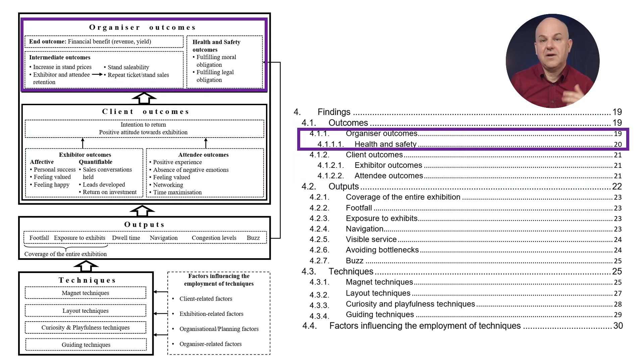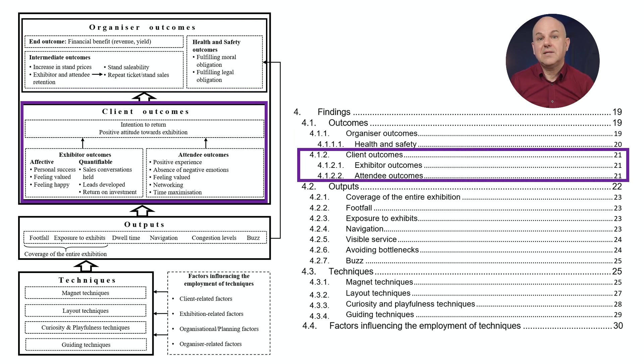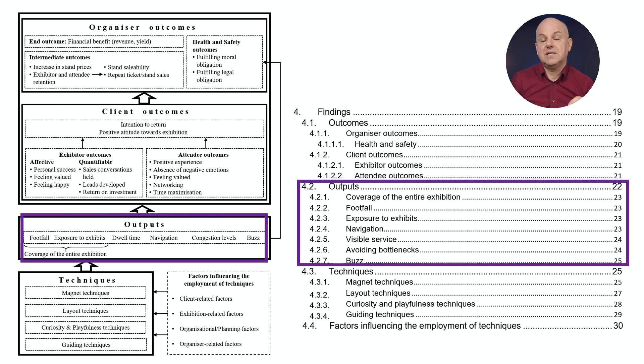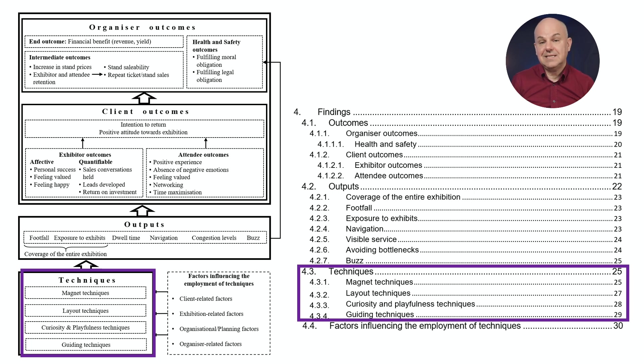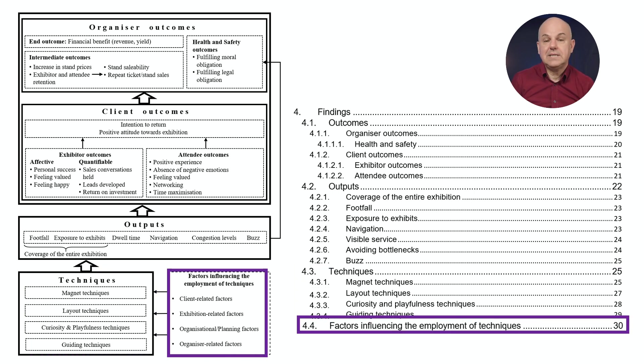Section 4.1.1 covers the organiser outcomes and 4.1.2 covers the client outcomes. Section 4.2 refers to the outputs, with subsections for each of the seven specific outputs. Section 4.3 covers the techniques — four types: magnet, layout, curiosity and playfulness, and guiding techniques. Section 4.4 covers the factors influencing the employment of techniques. So if the conceptual framework has been well designed, structuring the data analysis chapter becomes a fairly straightforward process, as this example illustrates.